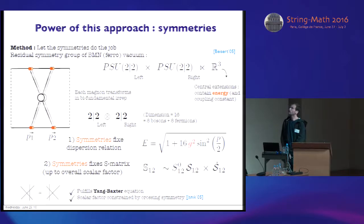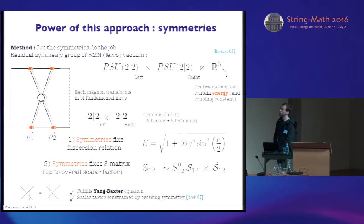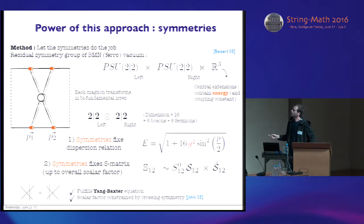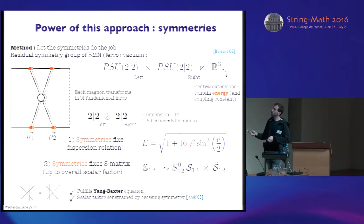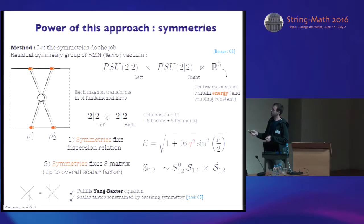The precise form is given by this central extension of two products of the algebra, this super group — this projective SU(2|2). So there is a left and a right part that precisely rotates the left and the right part of our magnon. So our magnon falls into some bifundamental representation of this group.